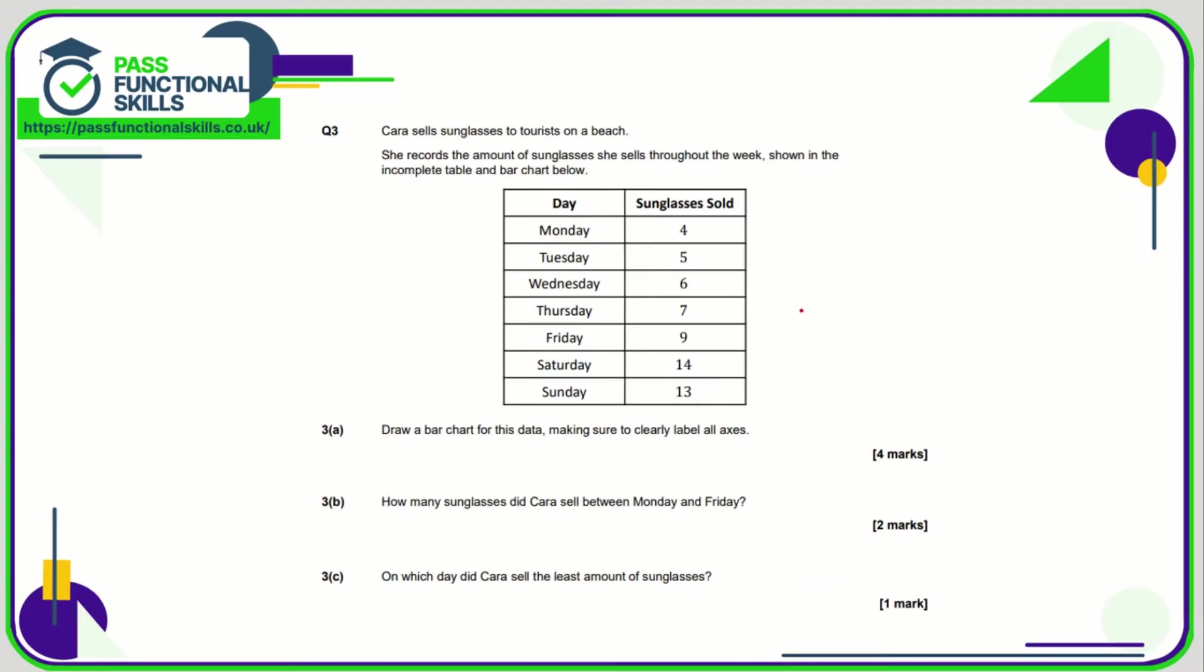Question number three. We need to draw a bar chart for this data. Up the side we want sunglasses sold. We're going to start at zero, need to go up to fourteen, so I'd recommend going up to fifteen. You might want to go up in ones if you've got plenty of space. Whatever you do, don't go zero to 100, that's a complete waste of space.